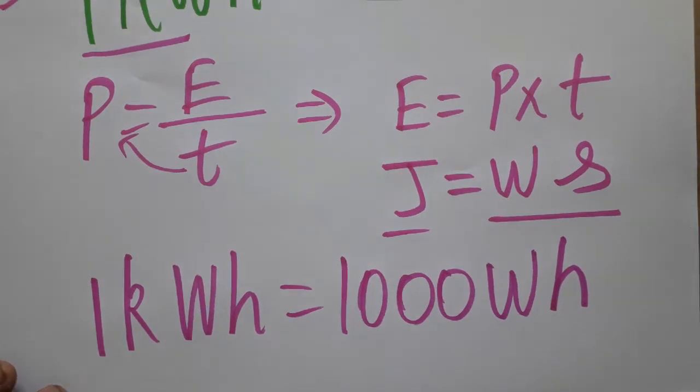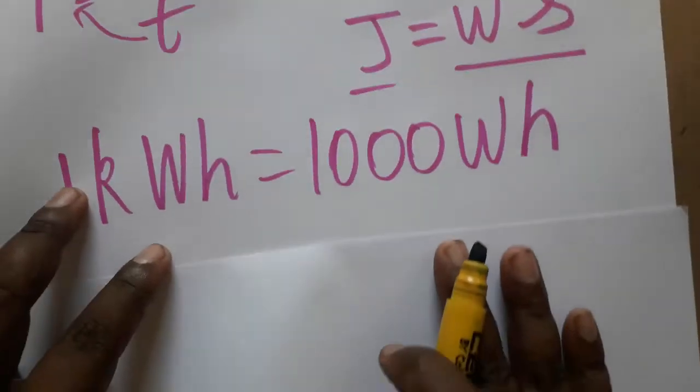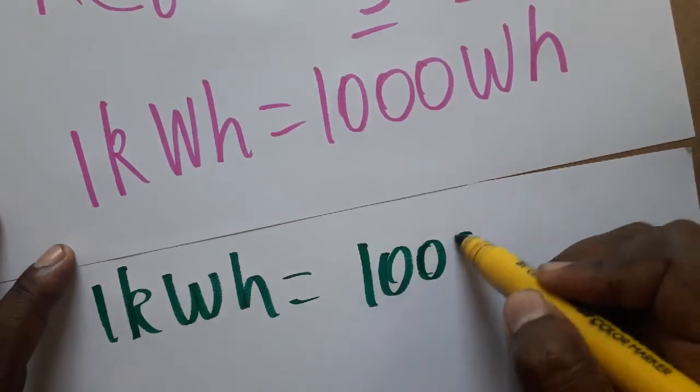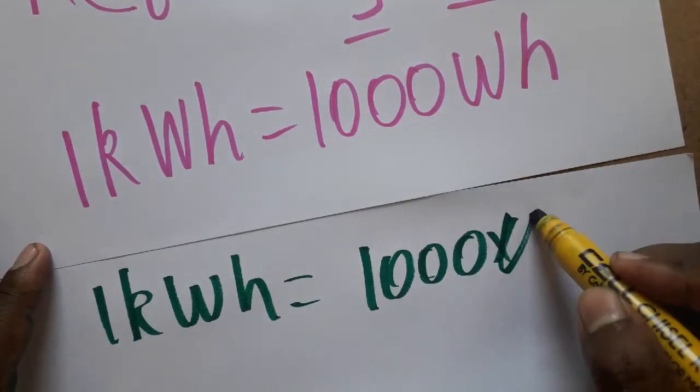One hour is 3600 seconds. So we can take 1 kWh as equal to 1000 watts into 3600 seconds.